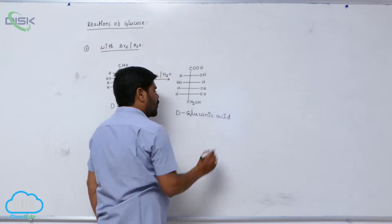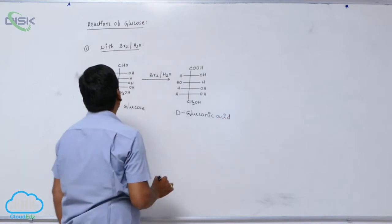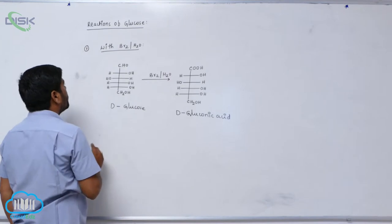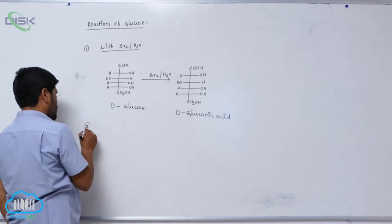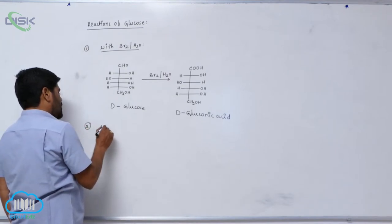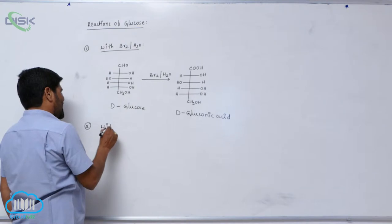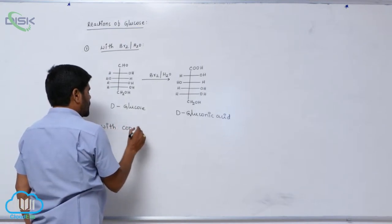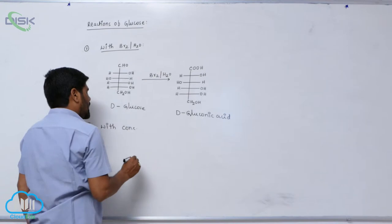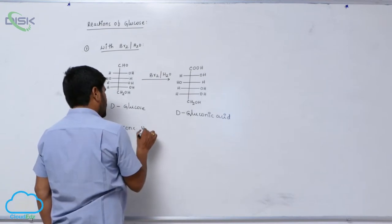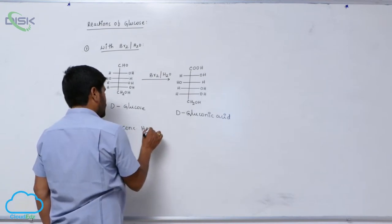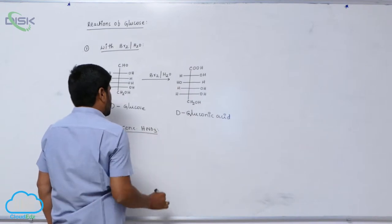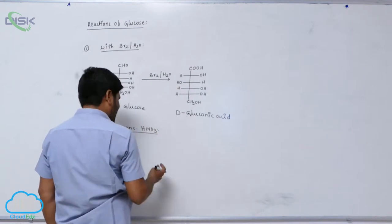D-gluconic acid. Second reaction: with concentrated nitric acid.